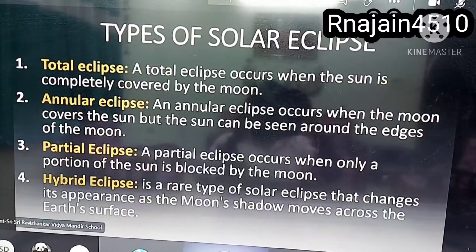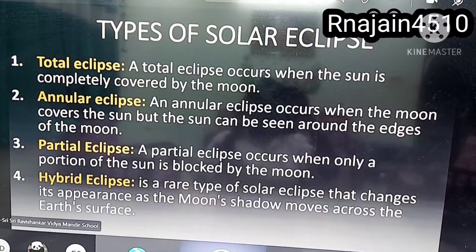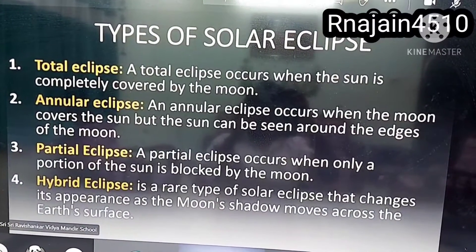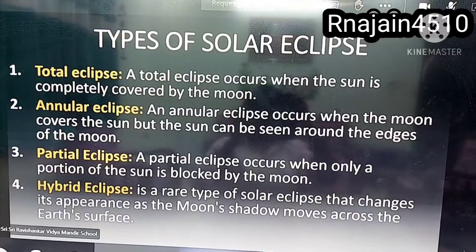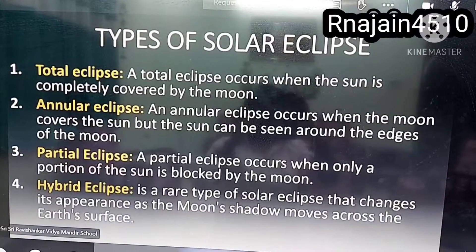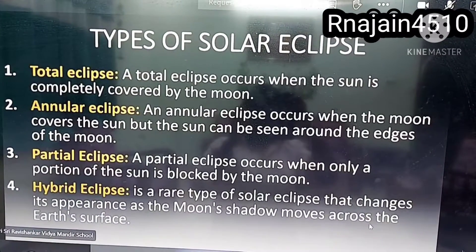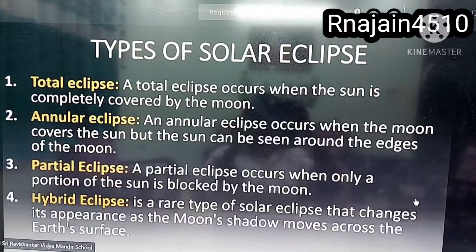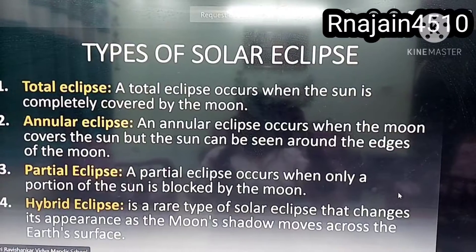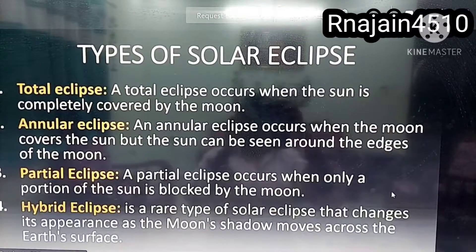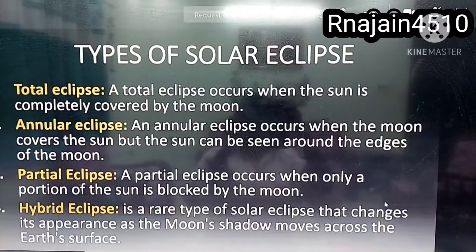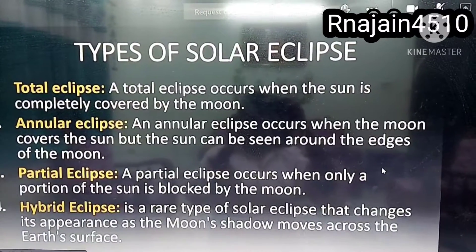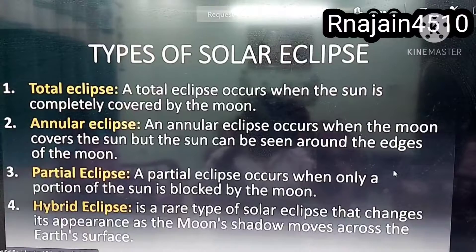A partial eclipse occurs when only a portion of the sun is blocked by the moon. A hybrid eclipse is a rare type of solar eclipse that changes its appearance as the moon's shadow moves across the earth's surface.